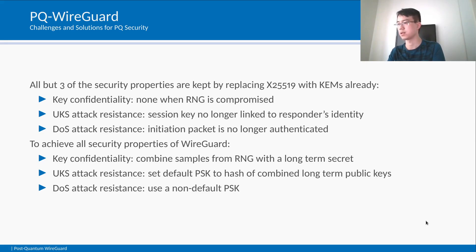Key confidentiality: the attacker can compromise the random number generators of Alice and Bob. In this case, PQ WireGuard does not achieve any security. To mitigate this issue, we combine samples from the random number generator with a long-term secret sigma using a pseudo-random function. In practice, this long-term secret sigma can be stored, for example, on a smart card. Non-key share attack resistance: due to the lack of a replacement of the Diffie-Hellman results of the long-term key pairs, a non-key share attack is possible. One easy fix is to mix Bob's long-term public key into the chaining key material.